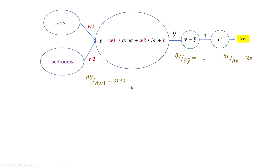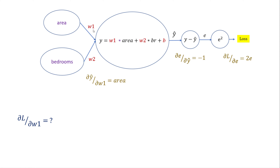Now we want the partial derivative of loss with respect to w1. Partial derivative answers: for a given change in w1, how much does my loss change? When training, as we feed area and bedroom samples one by one, we need to know how a change in w1 affects the loss — because we're trying to find the optimal values of w1 and w2, and partial derivatives help in that process.